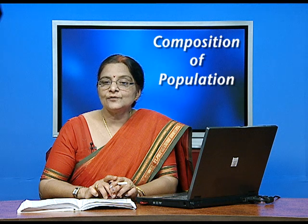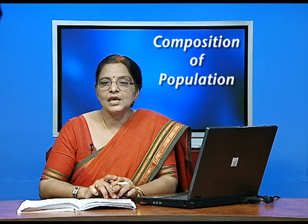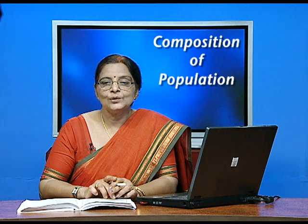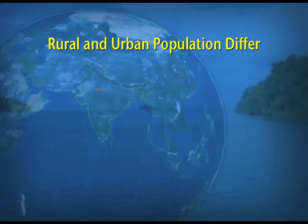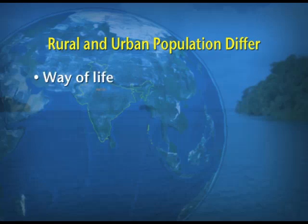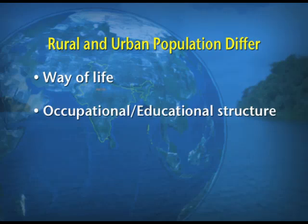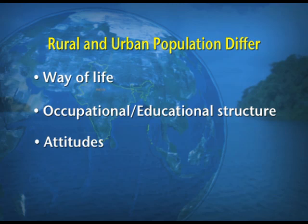This was for the first time after independence that the absolute increase in population is more in urban areas than in rural areas. The rural population of India, according to the 2011 census, is 68.84%, whereas the urban population is only 31.16%. Rural and urban populations differ from each other in way of life, educational structure, occupational structure, and attitudes of the people.